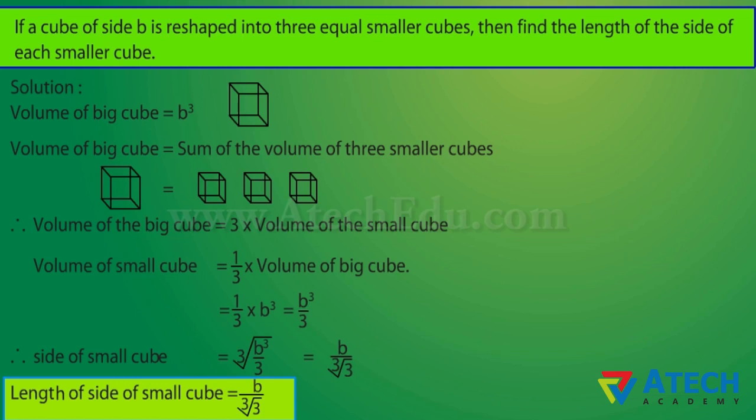We shall understand that the volume of the big cube is equal to the volume of the three smaller cubes. Hence, the volume of a small cube is equal to B³ / 3. Thus, the length of the side of a small cube is equal to B / ∛3.